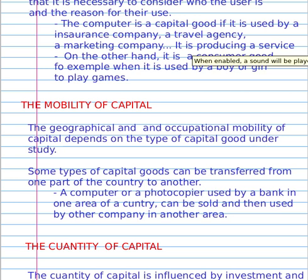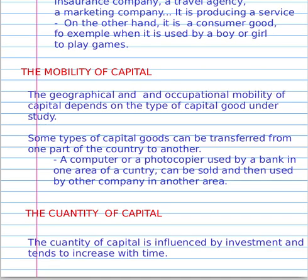The geographical and occupational mobility of capital depends on the type of capital goods and their use. Some types of capital goods can be transferred from one part of the country to another. For example, a computer or a photocopier used by a bank in one area of the country can be sold and then used by another company in another area.